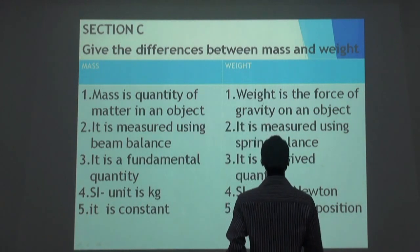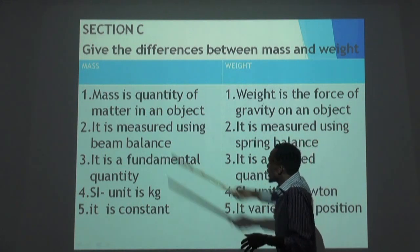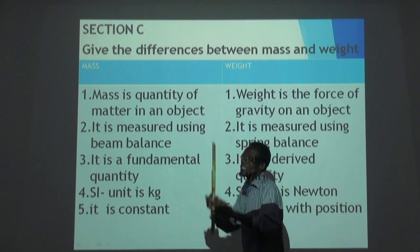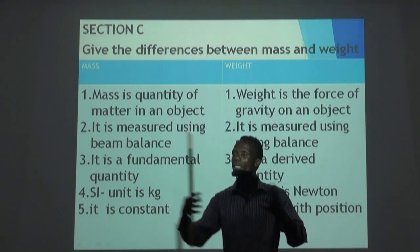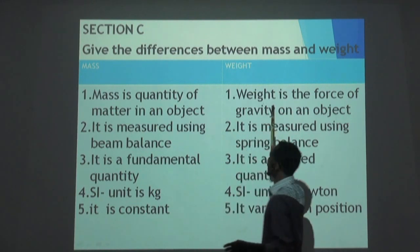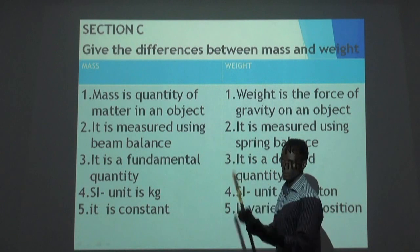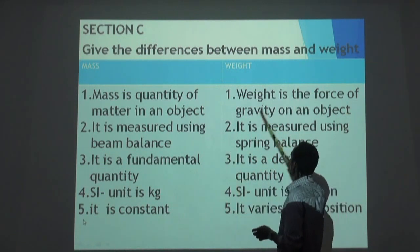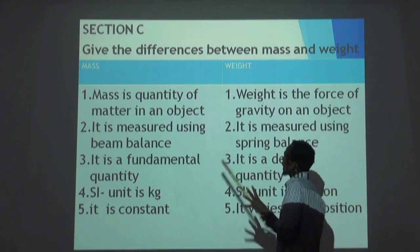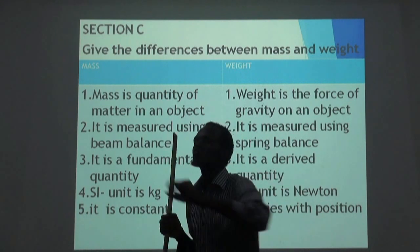But weight is the force of gravity on an object. Mass is the quantity of matter, while weight is the force of gravity on any object. That is the first difference — the first difference comes from the definition of those two terms, mass and weight.